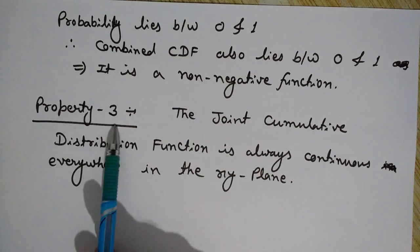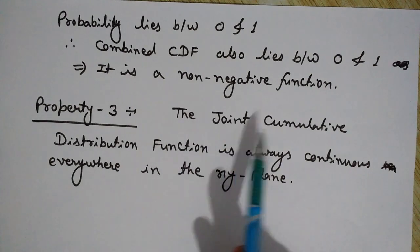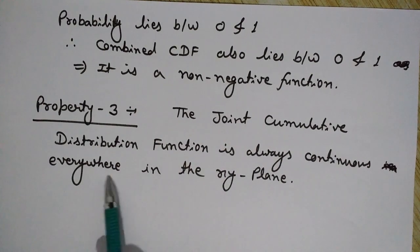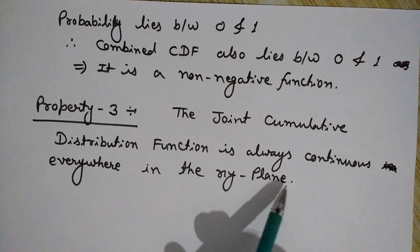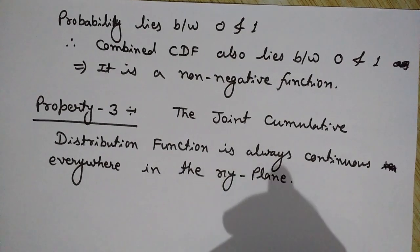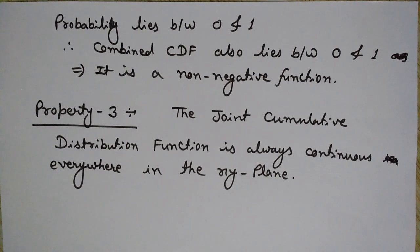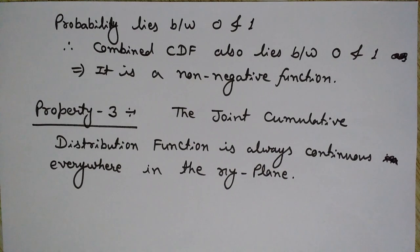Property number three: the joint cumulative distribution function is always continuous everywhere in the x-y plane. That was all about the joint cumulative distribution function. In the next video we will see the joint probability density function, that is the joint PDF, in detail. Keep watching Engineering Made Easy.